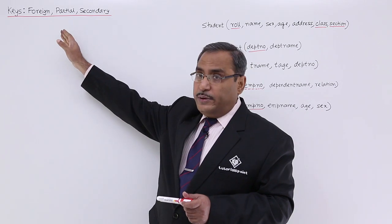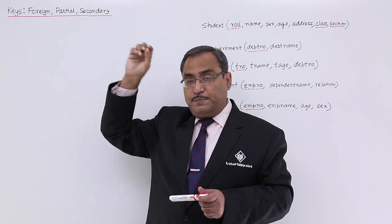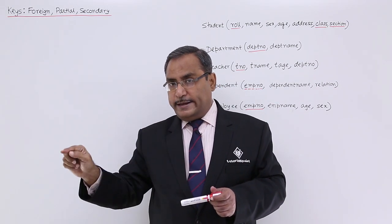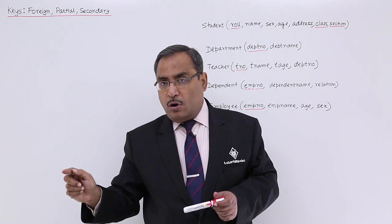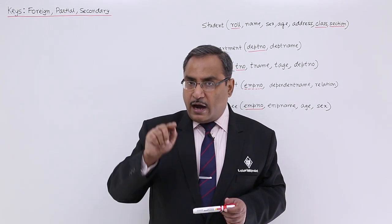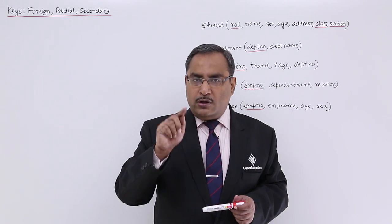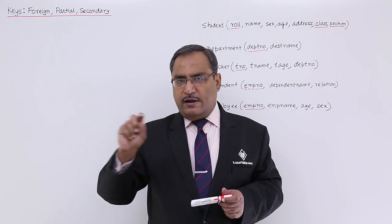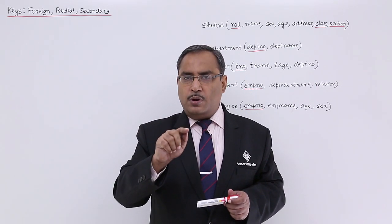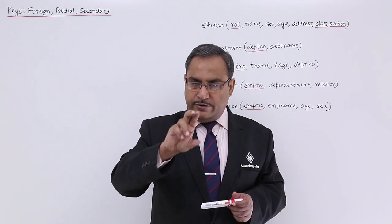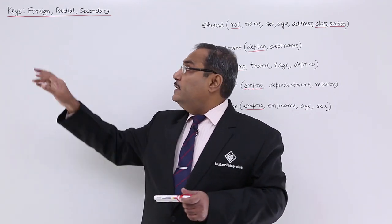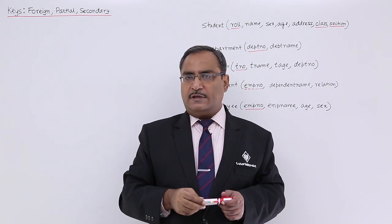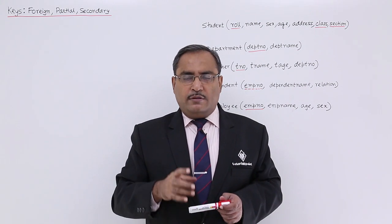To summarize: a foreign key is a prime attribute in one table that is a non-prime attribute in another table, and it invites a domain constraint. A partial key cannot uniquely identify each record but can select a bunch of related tuples. A secondary key is used for indexing to enable faster searching. Thanks for watching this video.